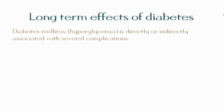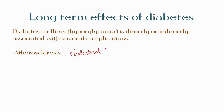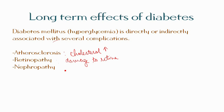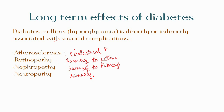Diabetes mellitus or hyperglycemia is directly or indirectly associated with several long-term complications. These include atherosclerosis — increased blood cholesterol levels; retinopathy — damage to the retina of the eye; nephropathy — damage to the kidneys; and neuropathy — damage to the nerves.